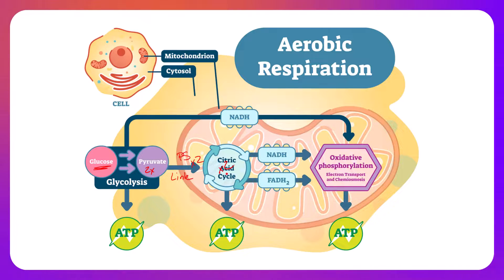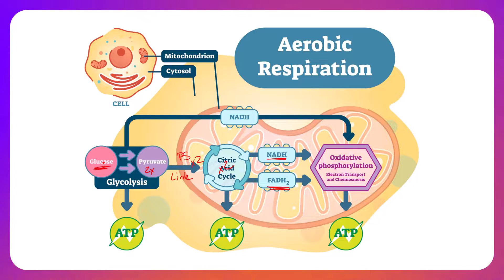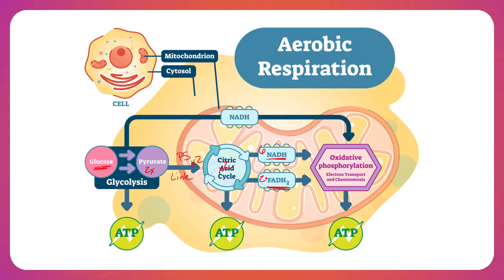The Krebs cycle produces NADH and FADH2. In terms of holistic numbers per glucose: the Krebs cycle produces three NADHs per turn, and since it happens twice, that's six total NADHs per glucose. One FADH2 is made per turn for a total of two FADH2s per glucose, and one ATP molecule is made per turn for a total of two ATPs per glucose. There is also NADH made during glycolysis and during the link reaction.